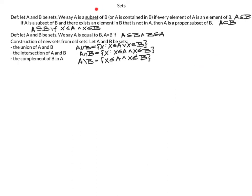Now that we've defined subsets and set equality, we can talk about constructing new sets from old ones. Given A and B, we can define the union, intersection, and complement. A union B contains all X such that X ∈ A or X ∈ B. A intersect B (upside-down U) contains everything in both A and B — what they have in common. The relative complement A \ B is everything in A minus what it has in common with B: X ∈ A and X ∉ B.